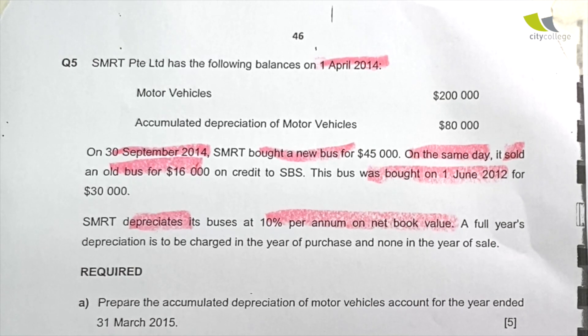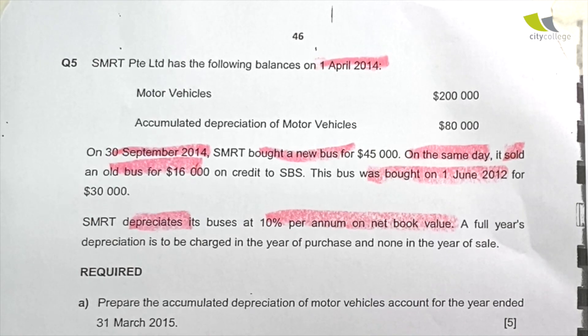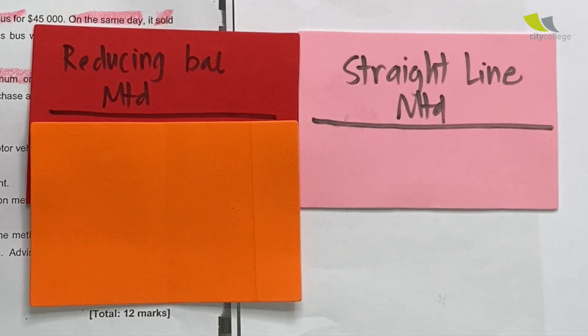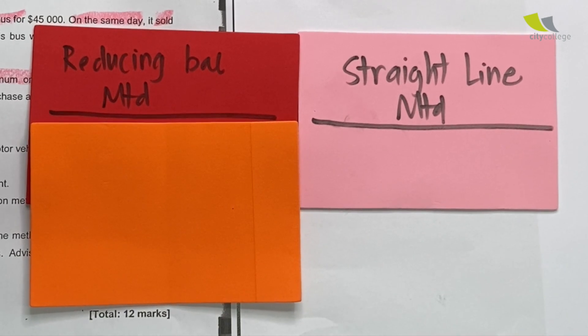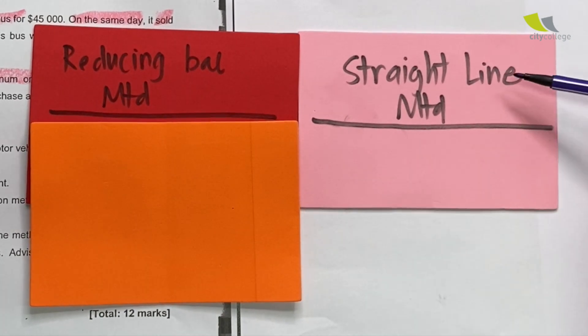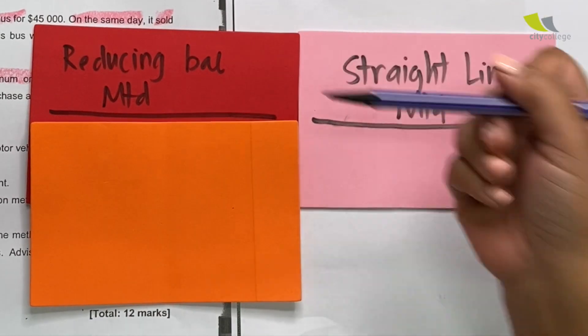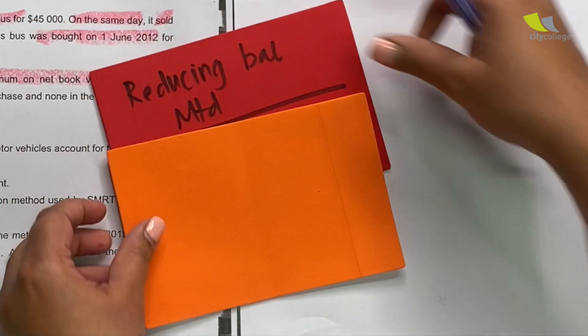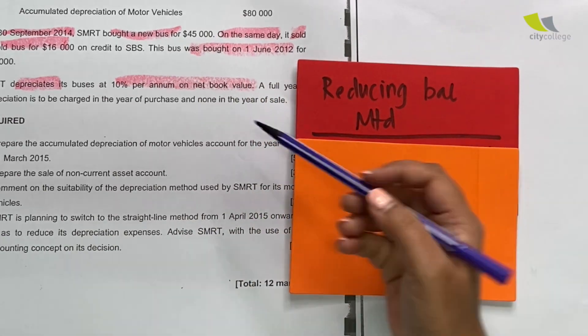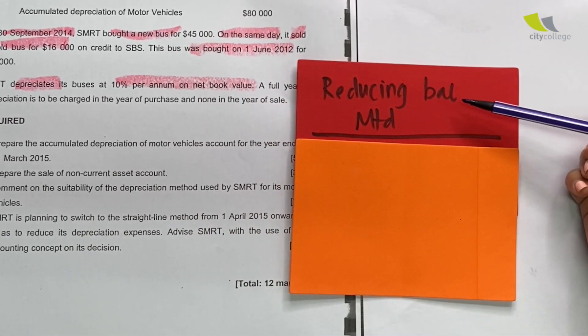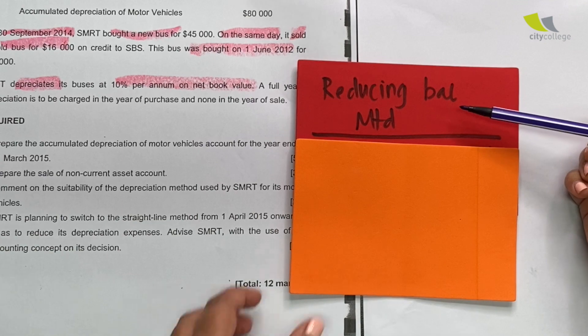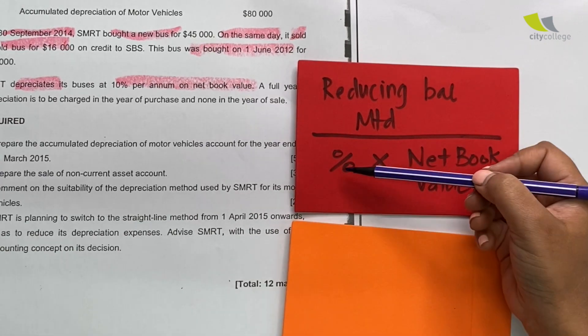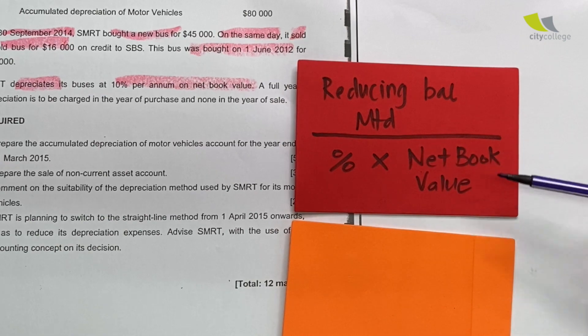This question is actually trying to hint to us the method of depreciation that we should deploy in this question. Let's pause there and do some quick revision. We have learned that there are two types of depreciation method in our syllabus. One is the straight line method and the other is the reducing balance method.